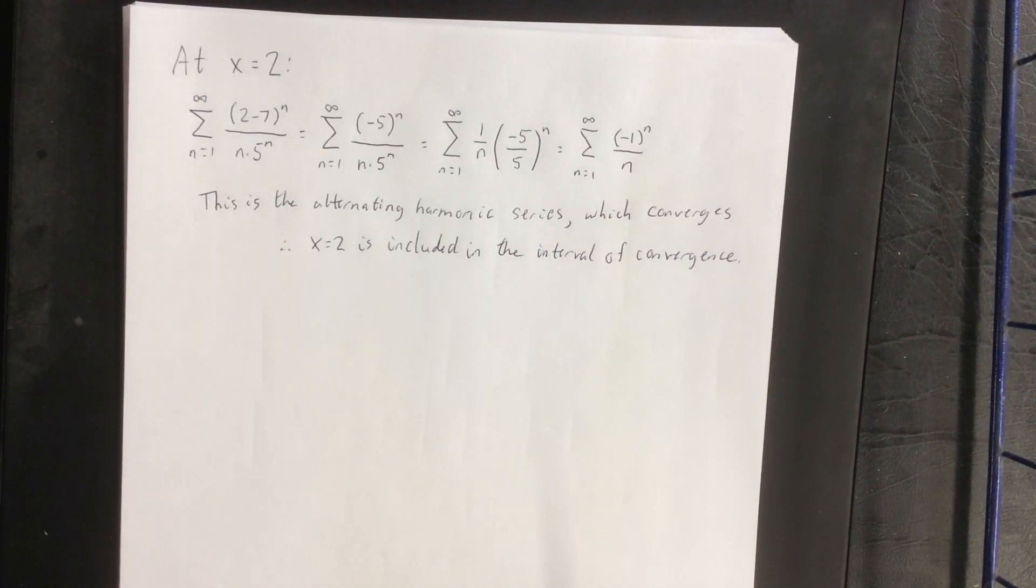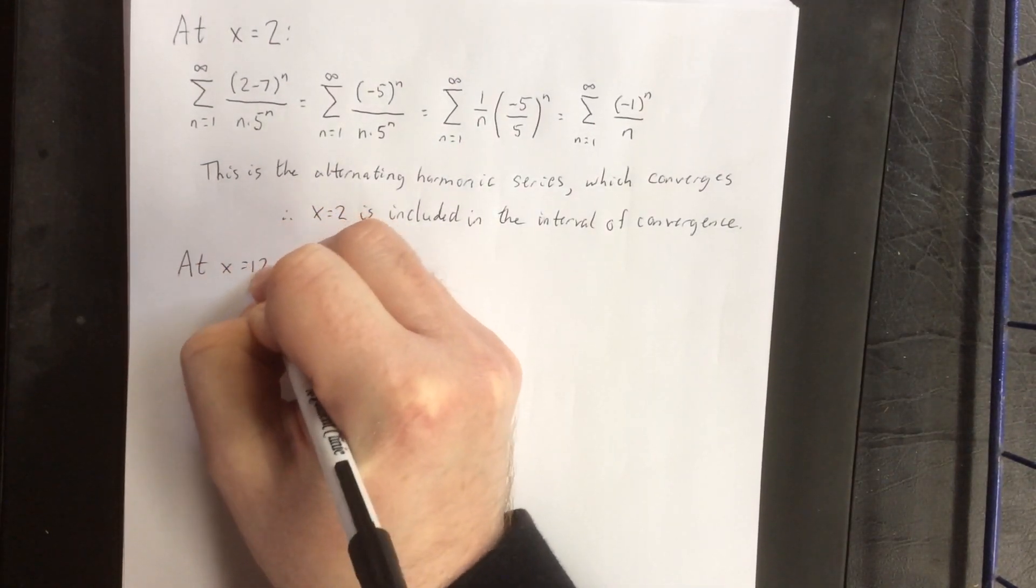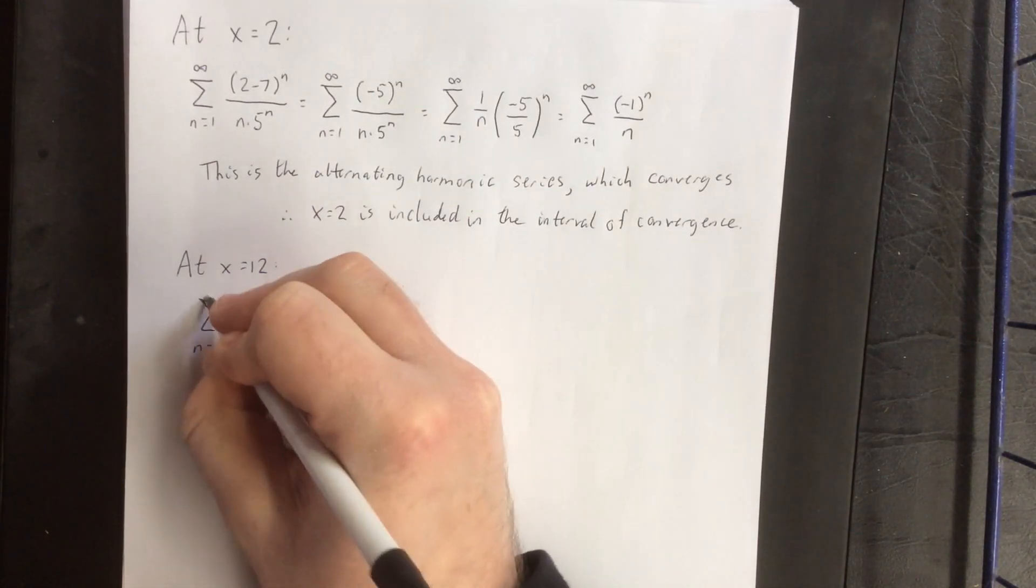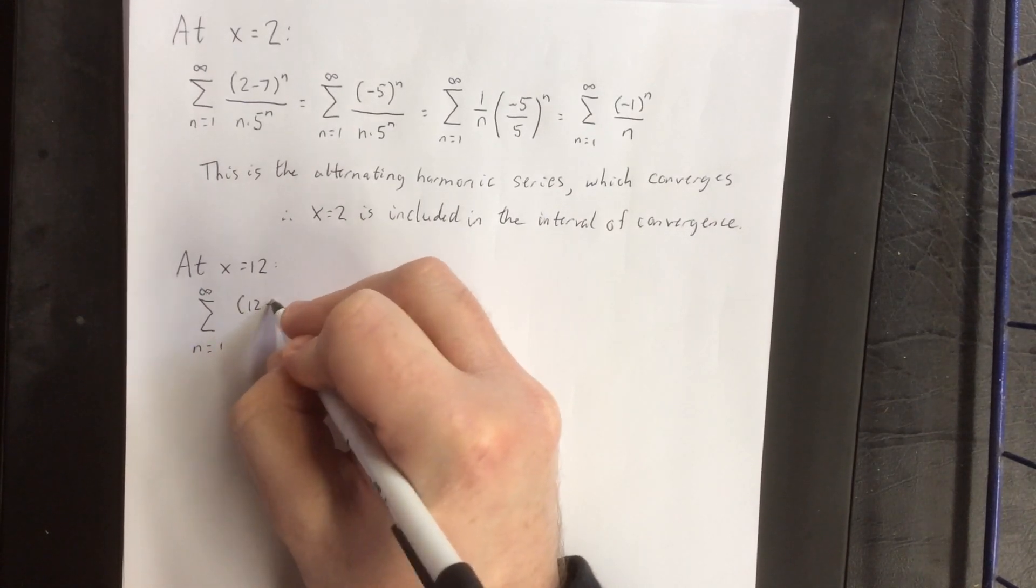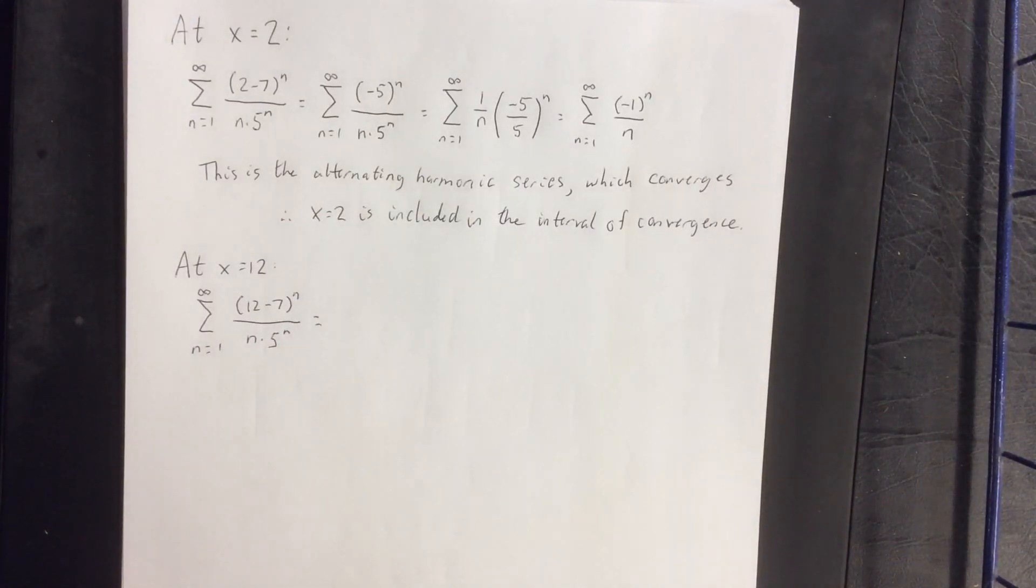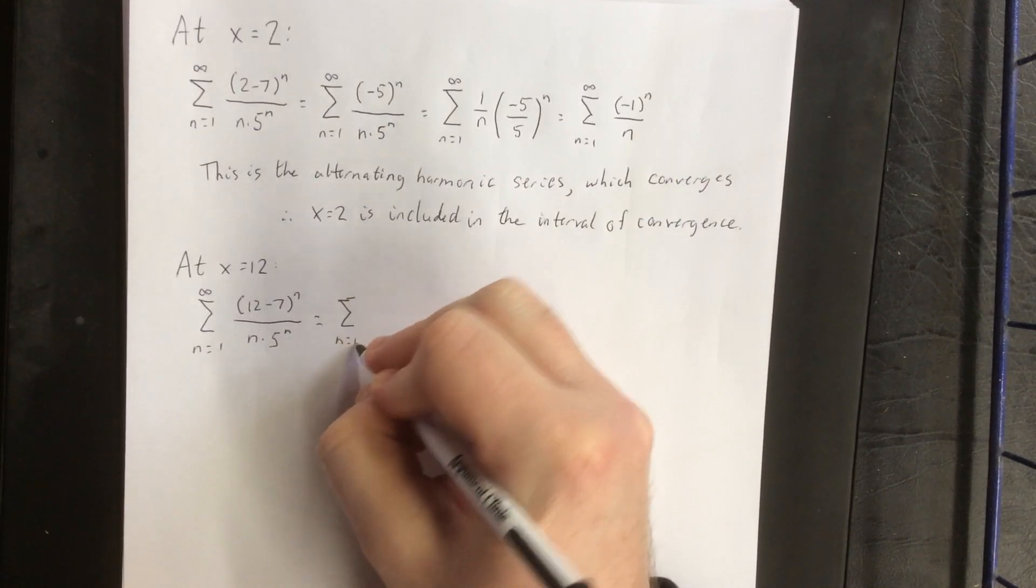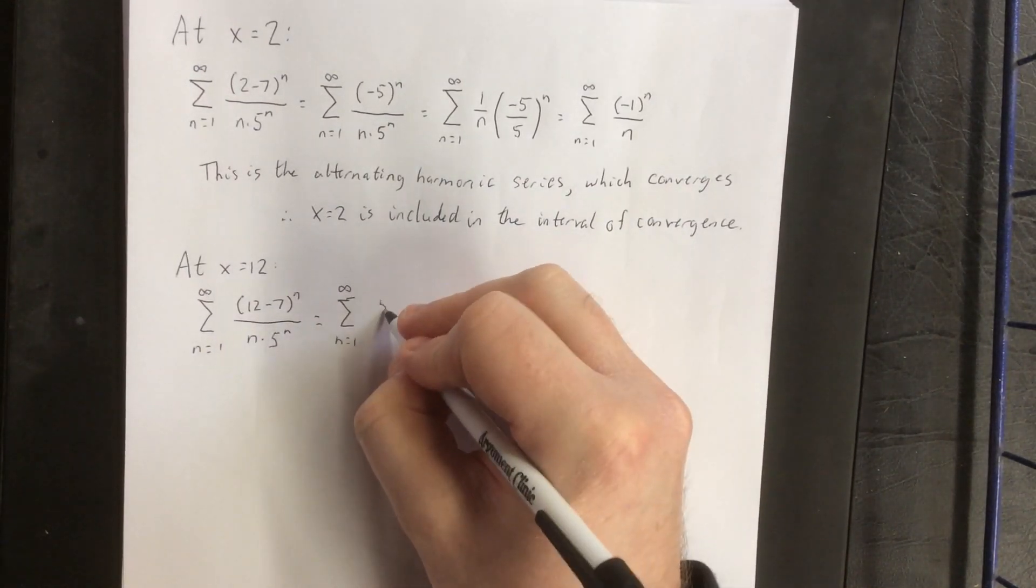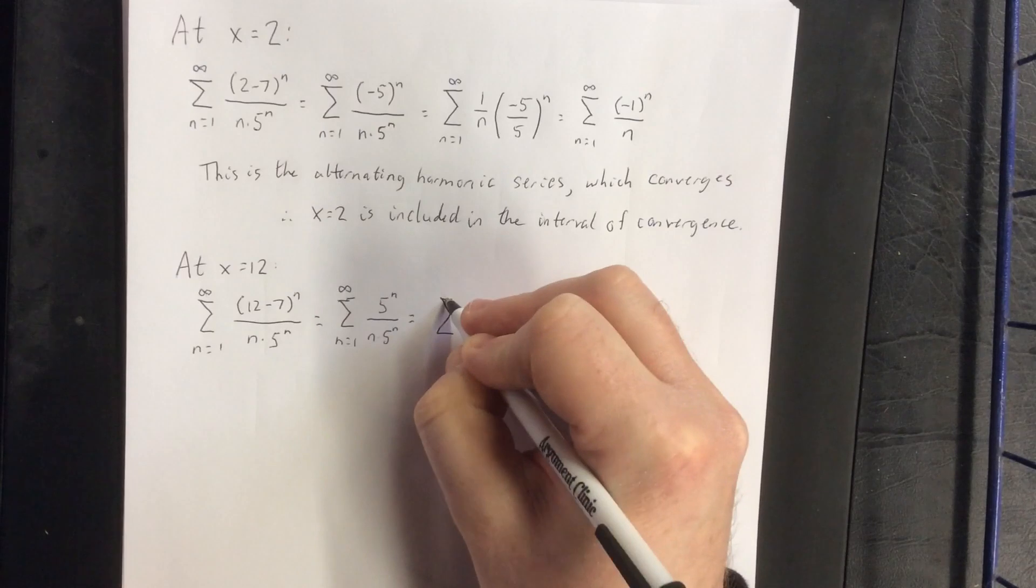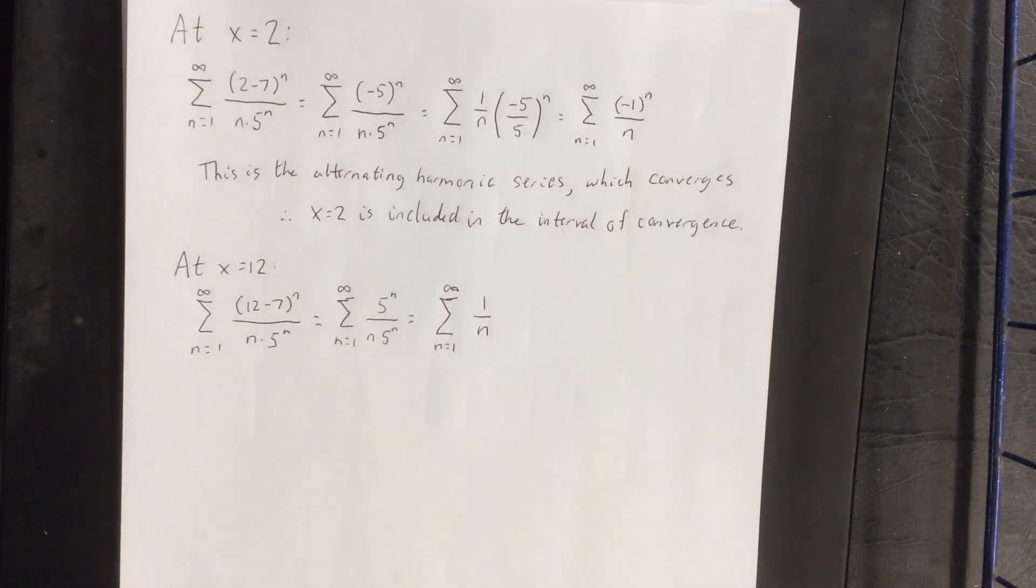We also need to test our other endpoint, the other endpoint being x equals 12. So we'll plug in x equals 12 to the original series, n equals 1 to infinity of 12 minus 7 raised to the n power over n times 5 raised to the n power. Performing a little bit of algebraic manipulation with this, 12 minus 7 will give us 5 to the n power over n times 5 to the n power. The 5 to the n powers will cancel each other out, leaving us with the sum of 1 over n.